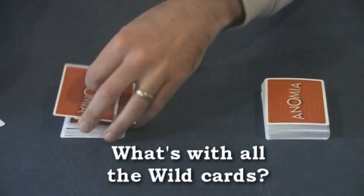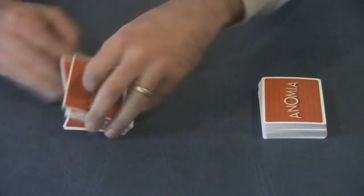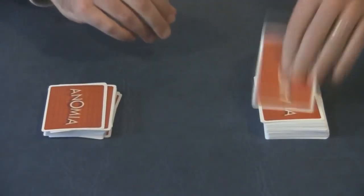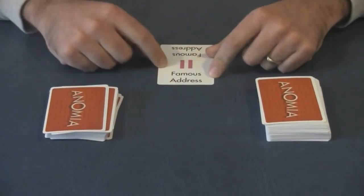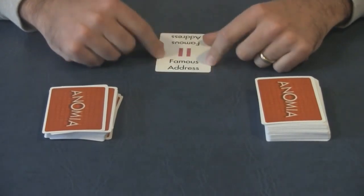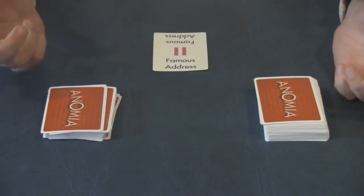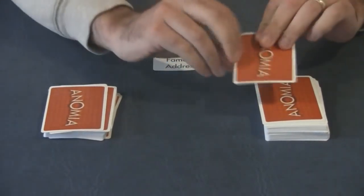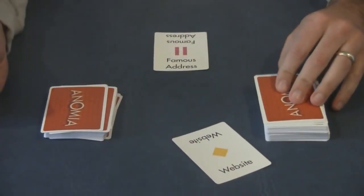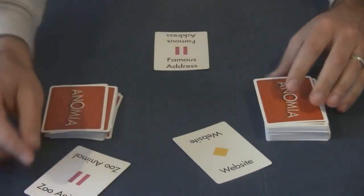Alright, really, we'll get to wild cards in a minute. I'll draw from this pile. Okay, famous address. Could be a tricky one, alright? Well, nothing happens yet, but the next player flips over his card. It's a website. The next person flips over his card. Zoo animal.